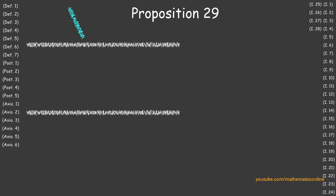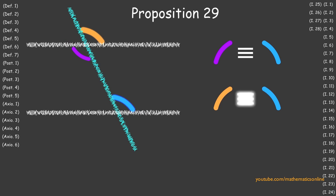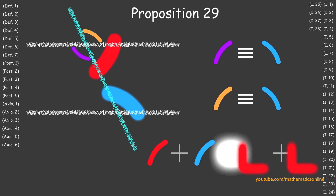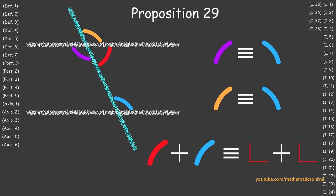In Proposition 29, we prove that if two parallel lines are intersected by a third line, then the alternate interior angles are congruent. The exterior angle is congruent to the opposite interior angle, and the sum of two interior angles on the same side are congruent to the sum of two right angles.